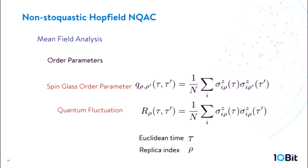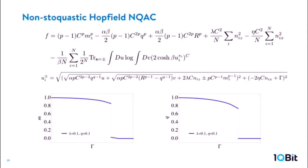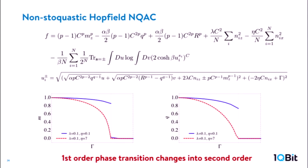We do the mean-field analysis for the Hopfield model. We introduce new order parameters: a spin glass order parameter (correlation between different replicas) and a counter fluctuation (correlation within the same replica). With penalty coupling set small, there is a first-order phase transition in both the magnetization and spin glass order parameter. Increasing the penalty coupling to 7, the first-order phase transition disappears and becomes a second-order phase transition. This feature seems quite generic: adding the XX term only within the logical qubit can still improve the computational result. That is the mean-field suggestion.